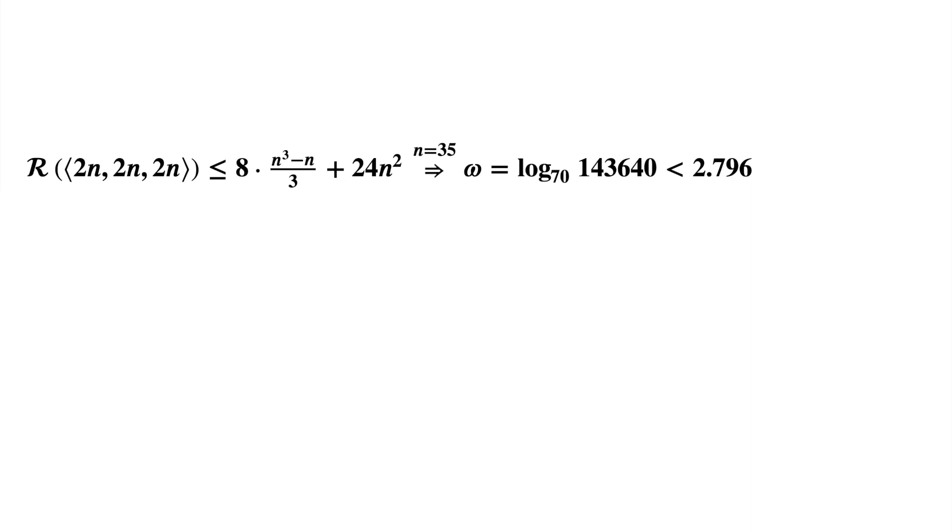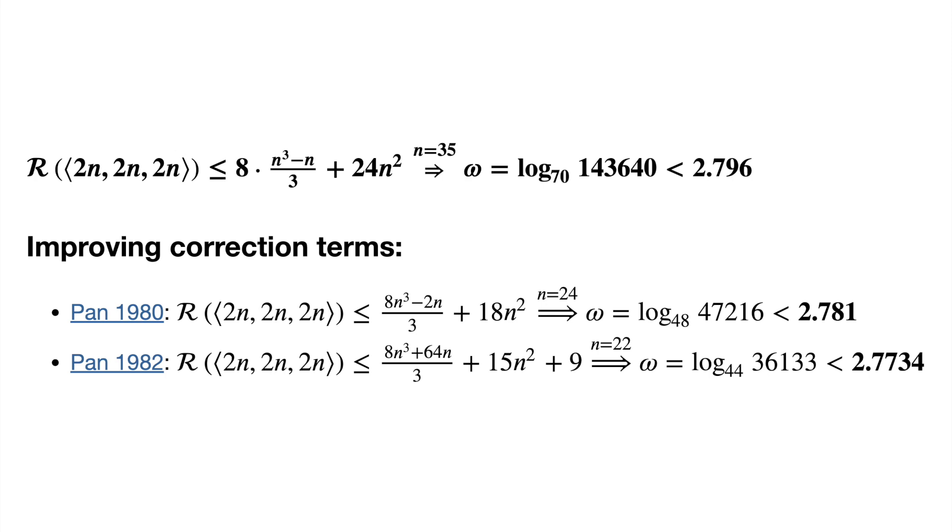After doing this, he obtained a runtime exponent of 2.796. Over the next few years, he would improve his method of applying correction terms, ultimately reducing the runtime exponent down to 2.7734.